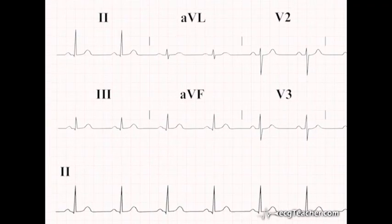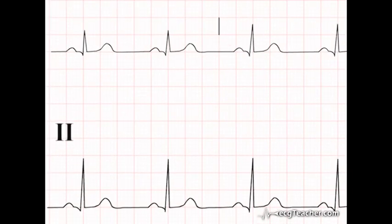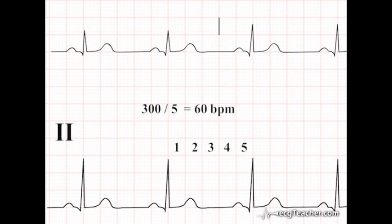Look at the rhythm strip on this ECG. There is 1 R wave present to every 5 large squares. So, in 300 large squares there will be 60 R waves present. This patient's heart rate is therefore 60 BPM.